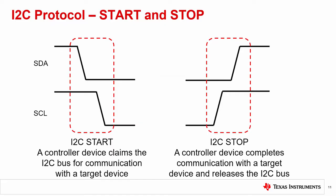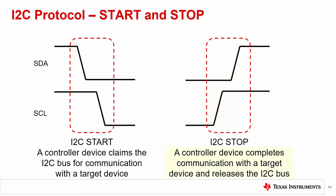I2C communication is initiated from the controller device with an I2C start condition. If the bus is open, an I2C controller may claim the bus for communication by sending an I2C start condition. To do this, the controller device first pulls the SDA low and then pulls the SCL low. This sequence indicates that the controller device is claiming the I2C bus for communication, forcing other controller devices on the bus to hold their communication. When the controller device has completed its communication, it releases the SCL high and then releases the SDA high. This indicates an I2C stop condition, releasing the bus to allow other controllers to communicate or for the same controller to communicate with another device.